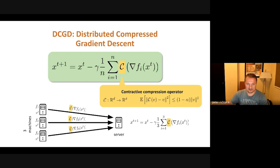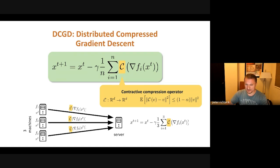In distributed compressed gradient descent, you have N machines — say N equals three. Each machine sends a compressed gradient. Since the original uncompressed gradient is D-dimensional and D is really huge, you compress the information before sending because communication is a huge bottleneck. The server then sends back uncompressed models. Here I am looking at the most basic situation where the upload is very expensive, but the download broadcast by the server is not that expensive.